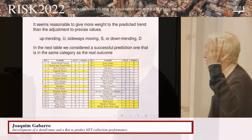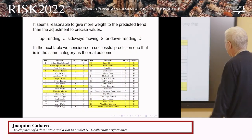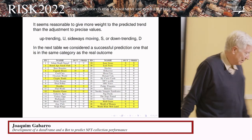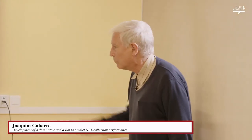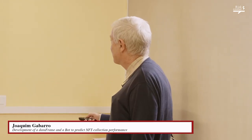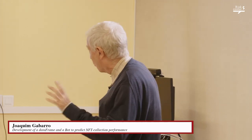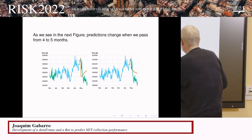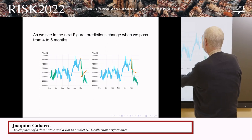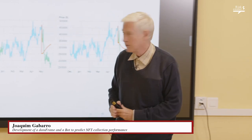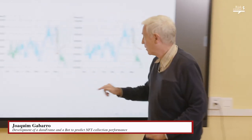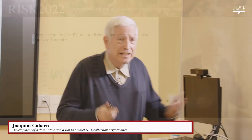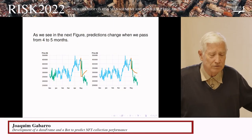Looking at the trend prediction results for 36 collections, the green cases show where the prediction succeeded. However, when passing from five months to four months of training data, the prediction changed noticeably, indicating the system is highly unstable. Perhaps the time window was too short. Mark, being a computer scientist, also developed a small minimalistic interface for setting parameters and obtaining results.